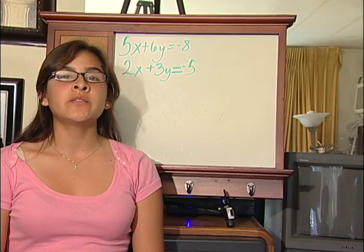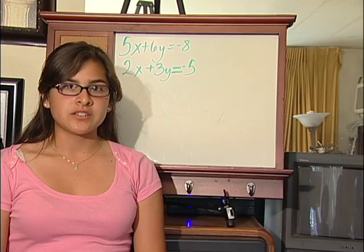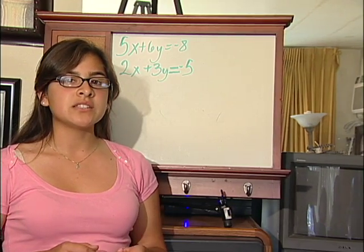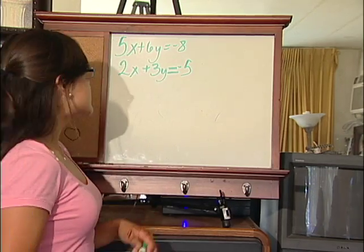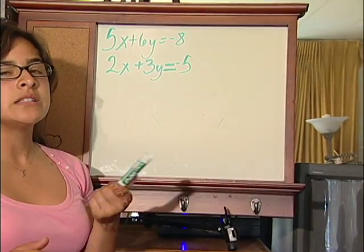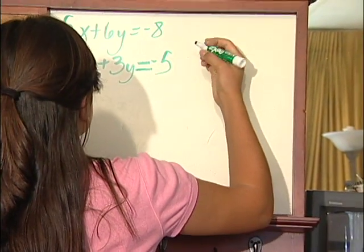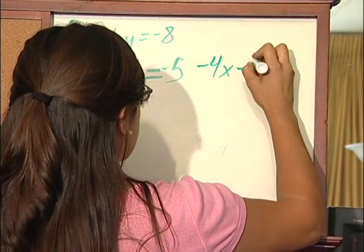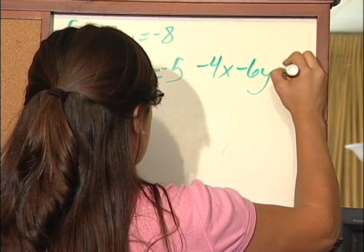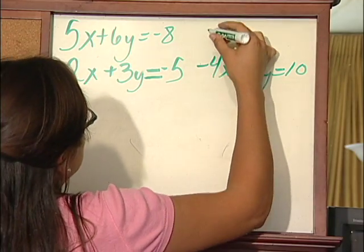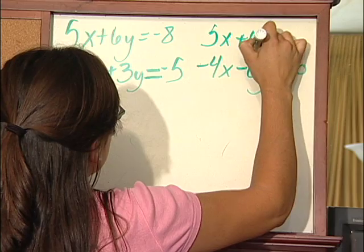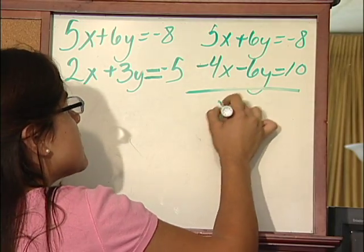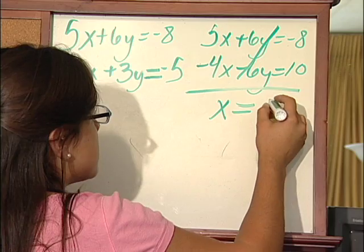Another method is elimination of a variable by multiplication. We will multiply an equation by a number so that when we add or subtract both equations, we end up with one variable. For this example, we're going to eliminate the y's. We will multiply the second equation by negative 2, ending up with negative 4x minus 6y equals negative 8. Then we add it to the first equation — the y's cancel out, and you get x equals 2.